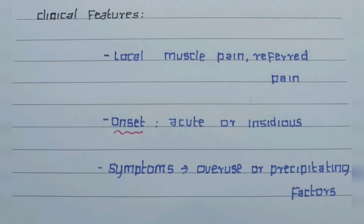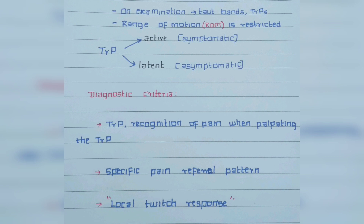Clinical features include local muscle pain and referred pain. The onset may be acute or insidious based on the type of MPS, and symptoms are usually related to overuse or precipitating factors. On examination, taut bands or trigger points are present, and range of motion is restricted in most cases. Trigger points may be active or latent. Active trigger points cause symptomatic pain, whereas latent trigger points cause asymptomatic pain. When a perpetuating factor acts upon a latent trigger point, it converts into an active trigger point and causes symptomatic pain.